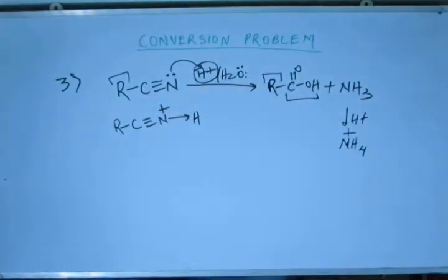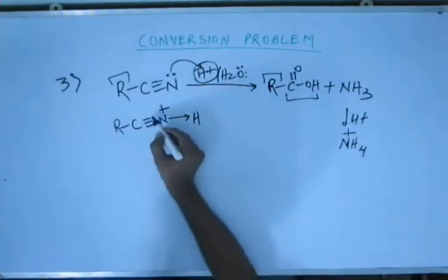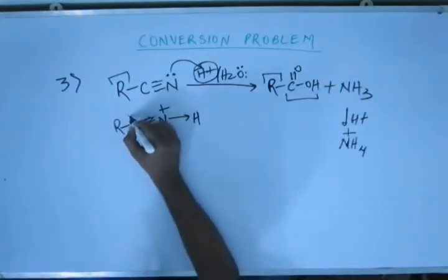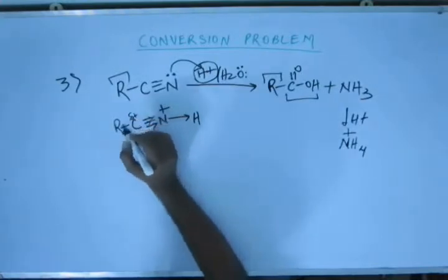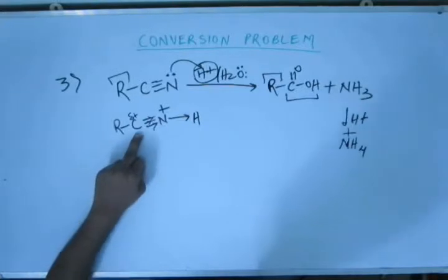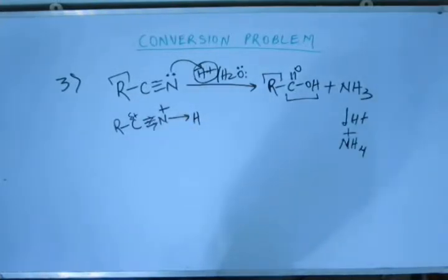When nitrogen forms a coordinate bond with H+, a plus charge comes on nitrogen because nitrogen's electron has transferred into the empty orbital of hydrogen. Once this happens, the plus charge on nitrogen causes it to mercilessly and ruthlessly pull electrons from all the bonds it has formed with carbon. Because nitrogen is the third most electronegative atom after fluorine and oxygen, it will pull electrons to fulfill its deficiency. So carbon in turn becomes electron-deficient, and the positive polarity on carbon increases sufficiently so that even a weak nucleophile like water will come and attack on carbon.